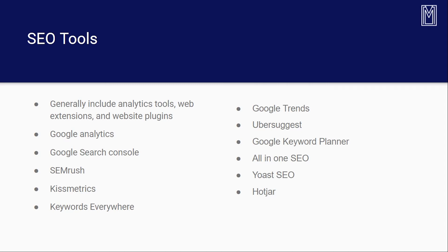Hotjar is also an analytics tool — it gives you heat maps for websites, showing you how people interact with your site: where they click most often when they land on your website, and so on. These are a few of the tools you'll be using for SEO; there are a lot more, but these are the majority of the essential ones.